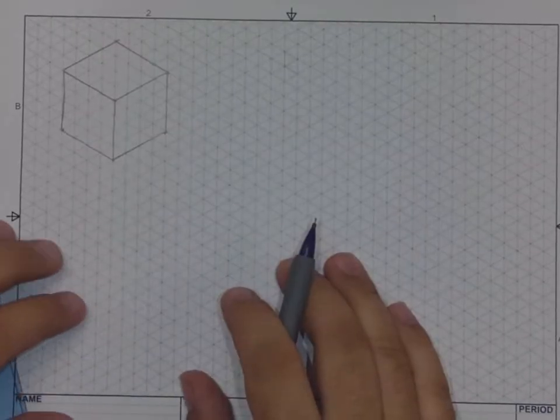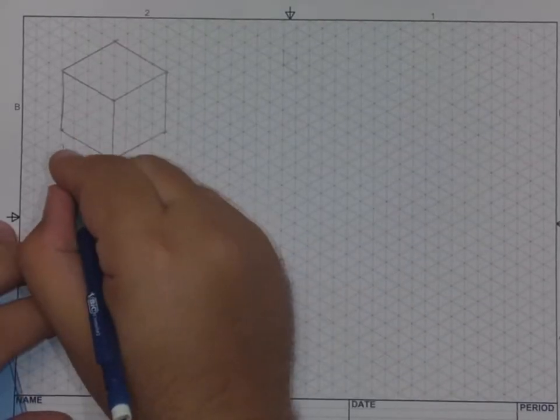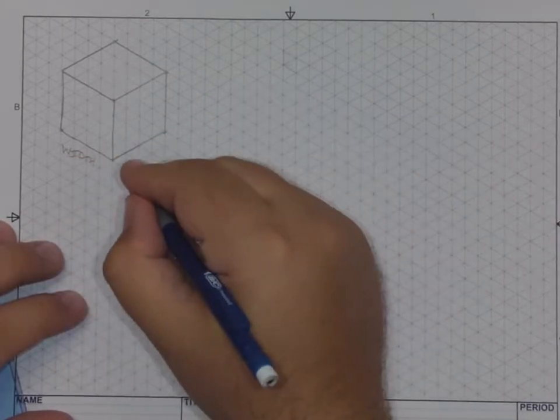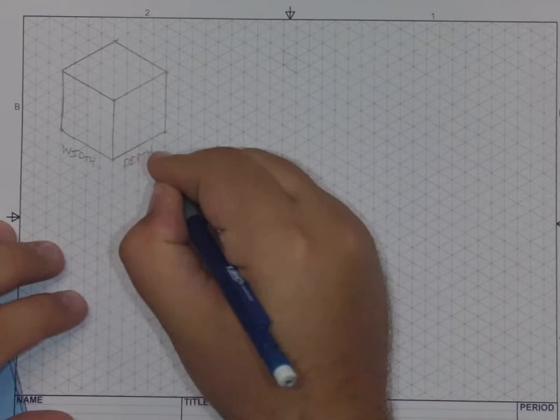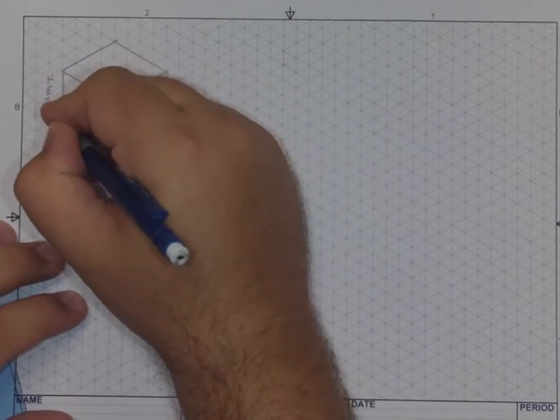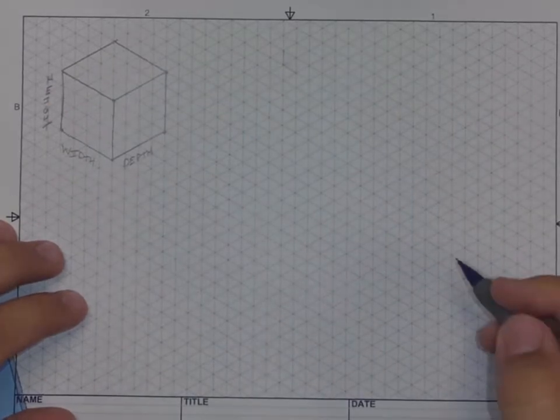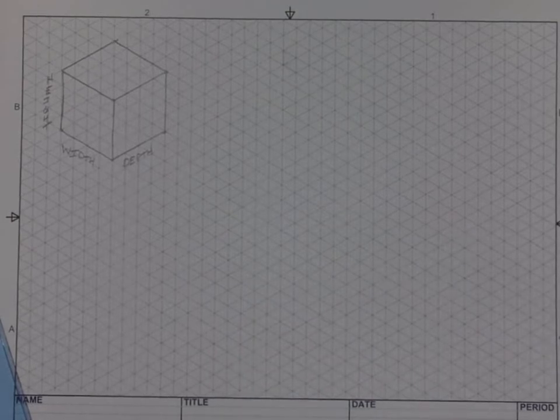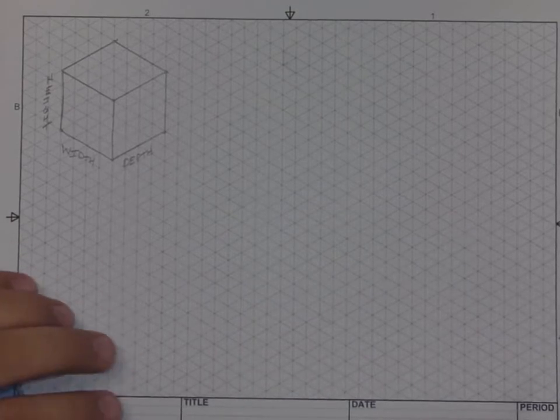Some terminology: this direction is the width, this direction is the depth, and top to bottom is the height. This is terminology to get used to as you start sketching with isometric. Length is something I would eliminate from my vocabulary.